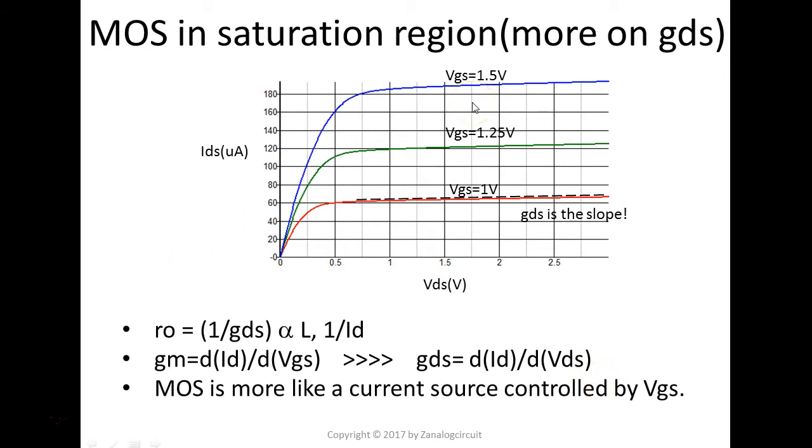Compared with the GM we talked about in the last slides, when the MOS transistor in the saturation region, GM is a lot bigger than the GDS. Otherwise, we get a problem.